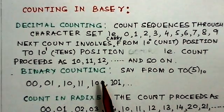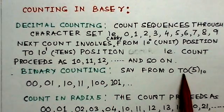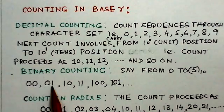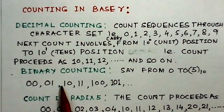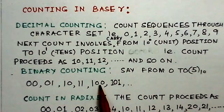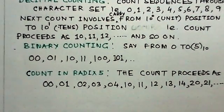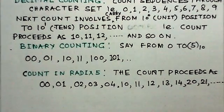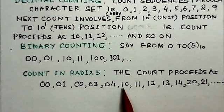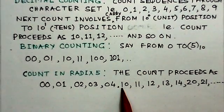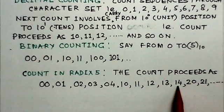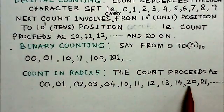In binary counting from zero to five decimal: 0 is 000, 1 is 001 — digits are exhausted, so carry is generated to the next significant bit, giving 010, 011, then 100, 101, and so on. For counting in radix 5: 00, 01, 02, 03, 04 — digits exhausted, carry generated giving 10, 11, 12, 13, 14 — carry again giving 20, 21, and so on.